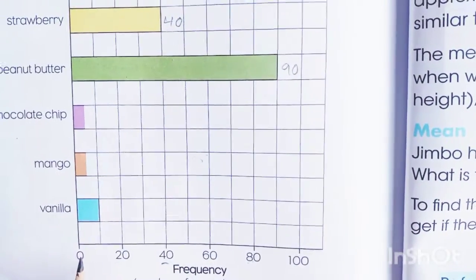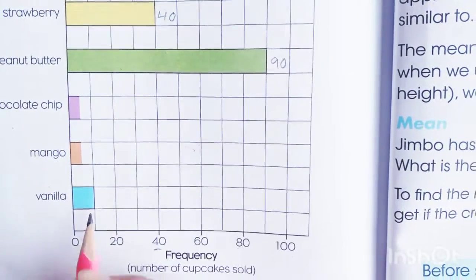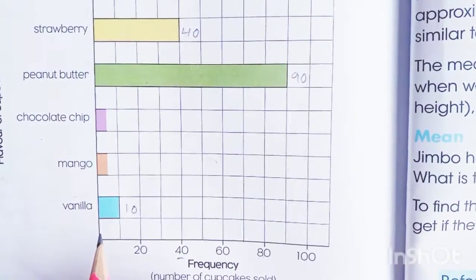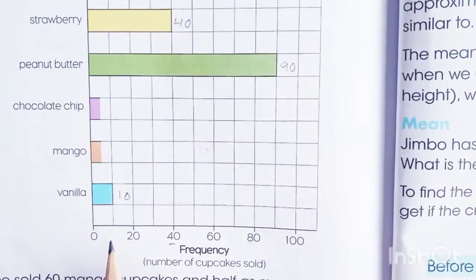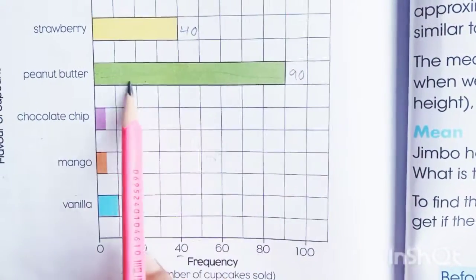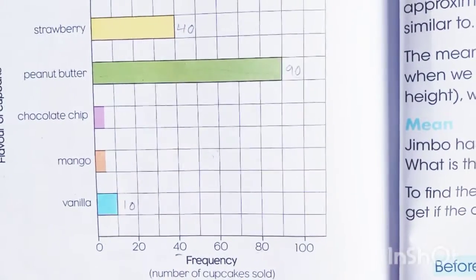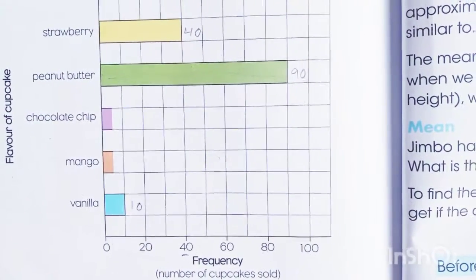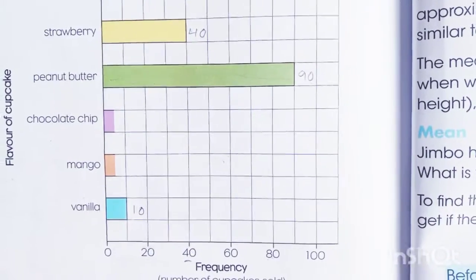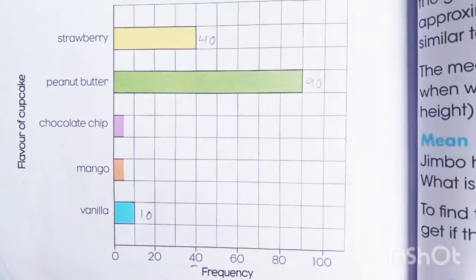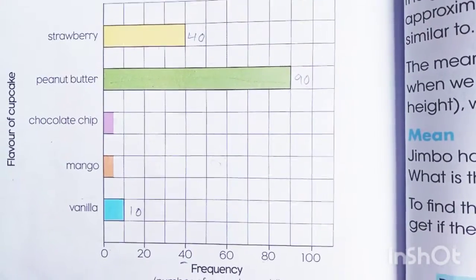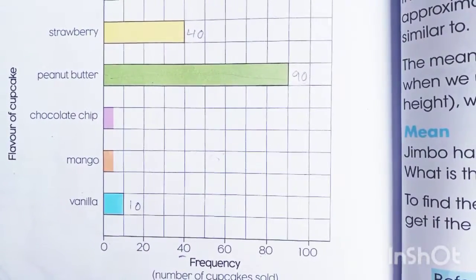Now for vanilla — vanilla is in the center of 0 and 20, that is the number 10. Students, observe this: the column bar graph from the last lecture in questions 1 and 2 is different. This is a horizontal bar graph and we have a horizontal bar graph here. We read the related questions and solve them.